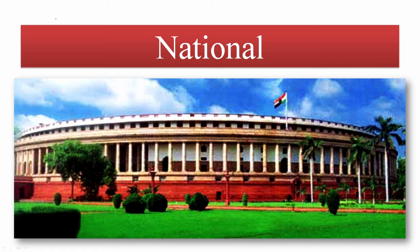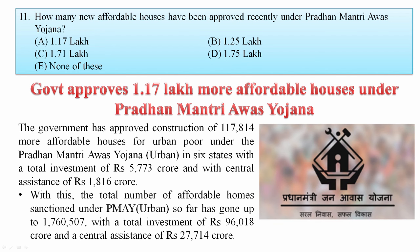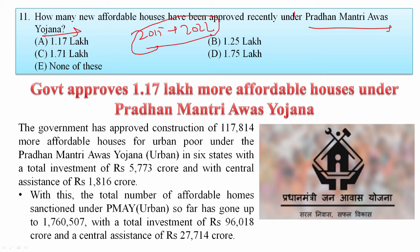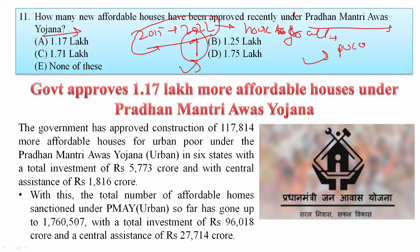Now let's cover the national section. How many new affordable houses have been approved under the Pradhan Mantri Awas Yojana? This mission runs from 2015 to 2022 with a deadline of Housing for All. The government approved construction of 1.17 lakh more affordable houses for urban poor in six states with an investment of nearly 6,000 crore rupees, bringing the total sanctioned under PMAY to 17 crore. Your answer is A — 1.17 lakh.